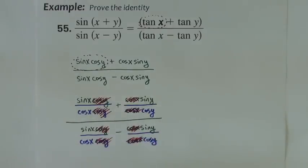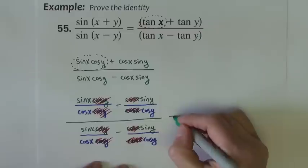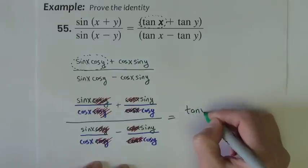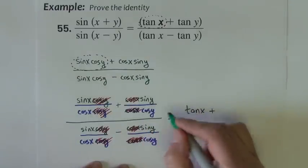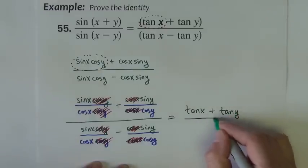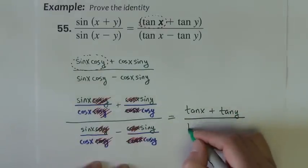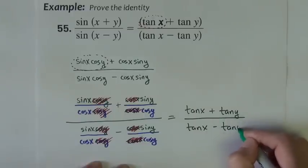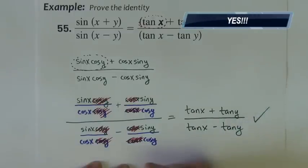Okay, and now we'll just reduce, rewrite the fractions that are left. Sine x over cosine x is tangent x, plus sine y over cosine y is tangent y. Sine x over cosine x, another tangent x, minus, and we have another tangent y, and that's proven.